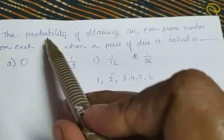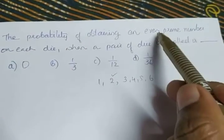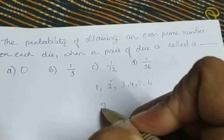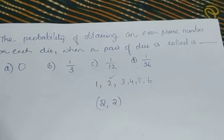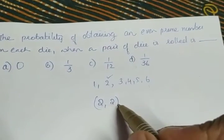The question is to find the probability of obtaining an even prime number on each die. So the first die must contain 2, second die also must contain 2. So the only favorable event is (2, 2).